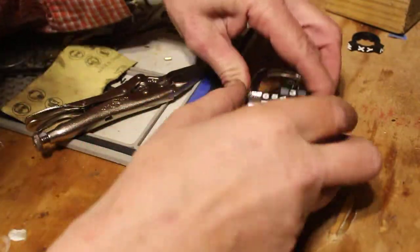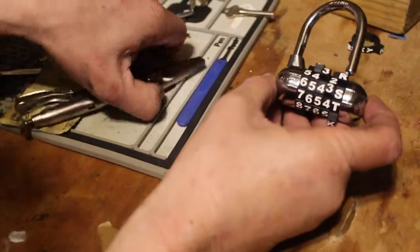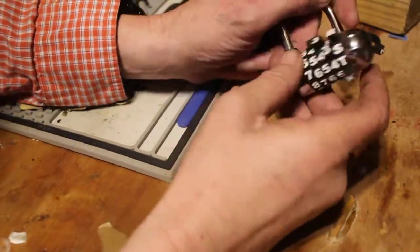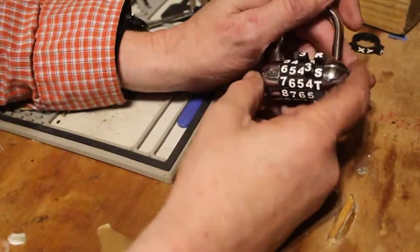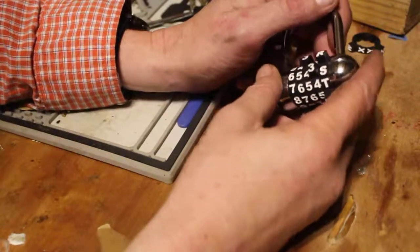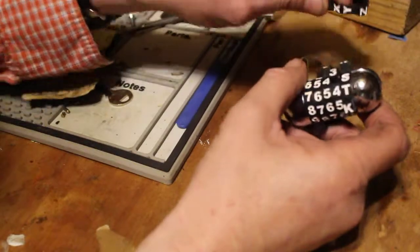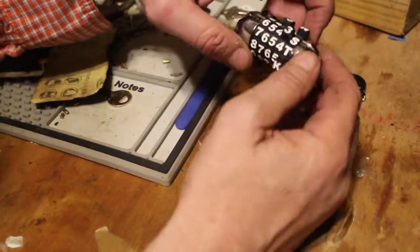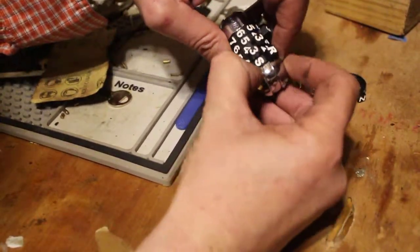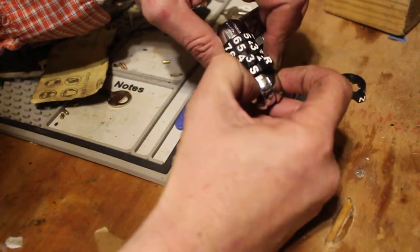Hey guys, today we're going to be taking a look at a Master Lock five-character word lock. These locks come with extra dials and allow you to set your own word or phrase or set of numbers.